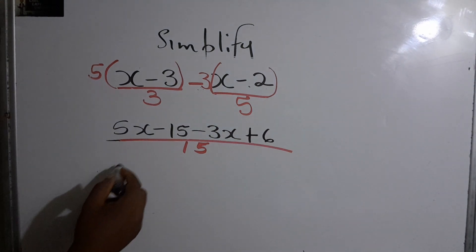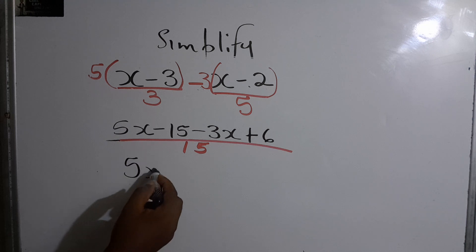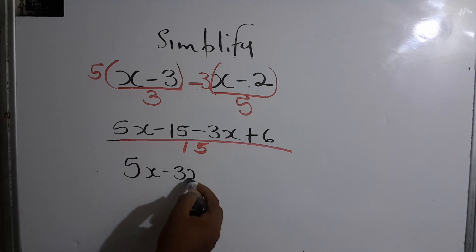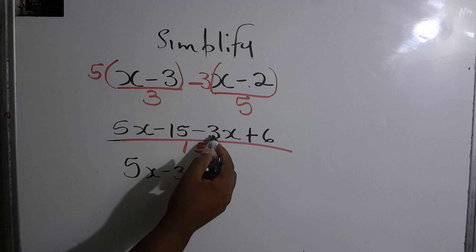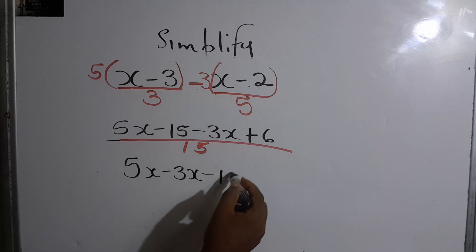Next we have to group the like terms, so we're gonna bring all our x's together along with the sign in front of it. So because this is minus 3x, we have minus 3x, minus 15, and a plus 6.